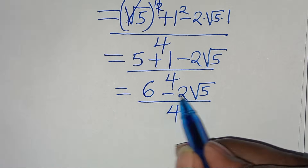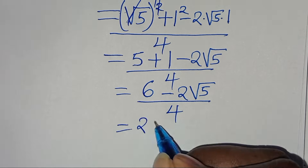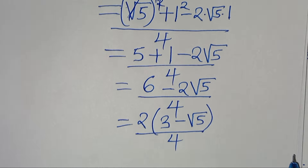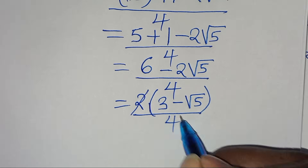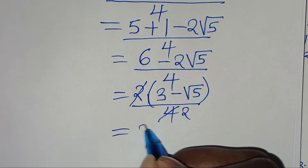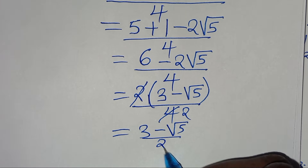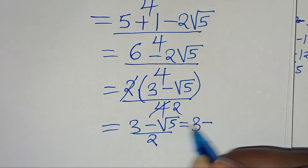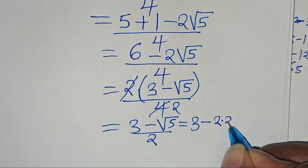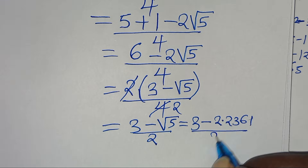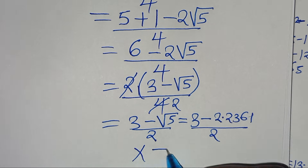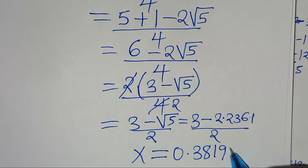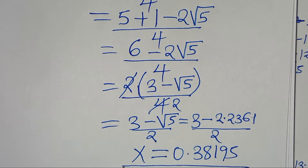Since 2 is common, we factor out 2 to get 2 times (3 minus √5), divided by 4, simplifying to (3 minus √5) divided by 2. And since √5 is approximately 2.2361, this gives x₂ equal to approximately 0.38195. So this is the second value of x.